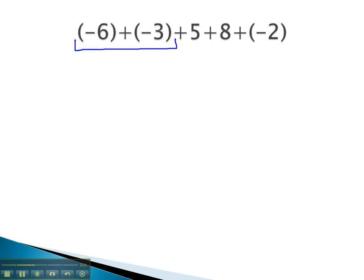Because they're both negative, it means we have lots of negatives together. Still negative, 6 and 3, there's a total of 9 negatives together. The rest of the problem is still the same, + 5 + 8 + (-2).